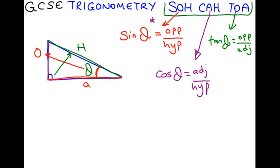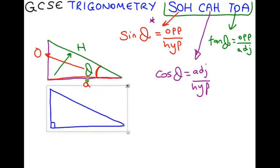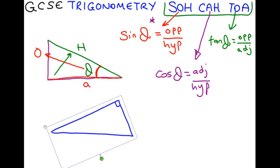Do not be confused if your triangle is different ways around. Say our triangle is like this, and the angle we're interested in is here. Opposite is there, hypotenuse here, and adjacent here. So be very careful about that.